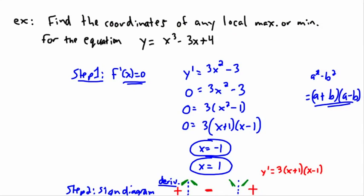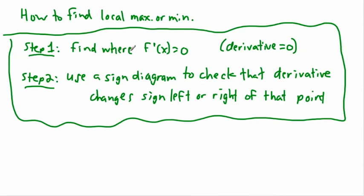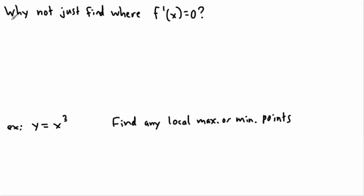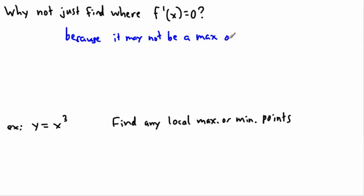What I'd like to do now is show you an example. We just looked at local maxes and mins, finding the maximum or minimum of some equation. The steps were: find where the derivative is equal to zero, then use a sign diagram to check that the sign changes from left to right. You might think we can just guess if it's a max or min, but it turns out it's not always a max or a min — so why not just find where the derivative equals zero? Because it may not actually be a max or min.